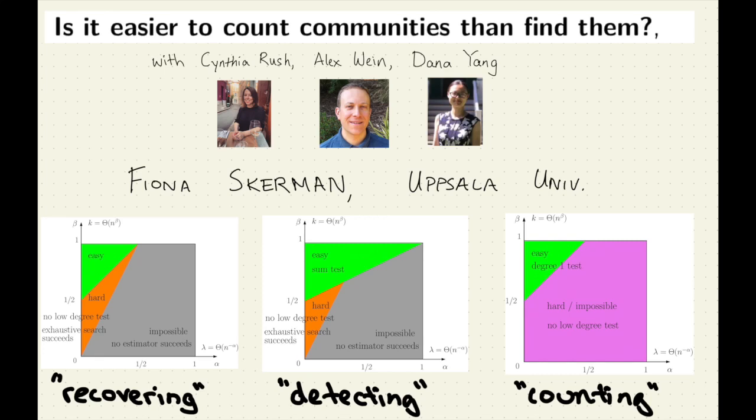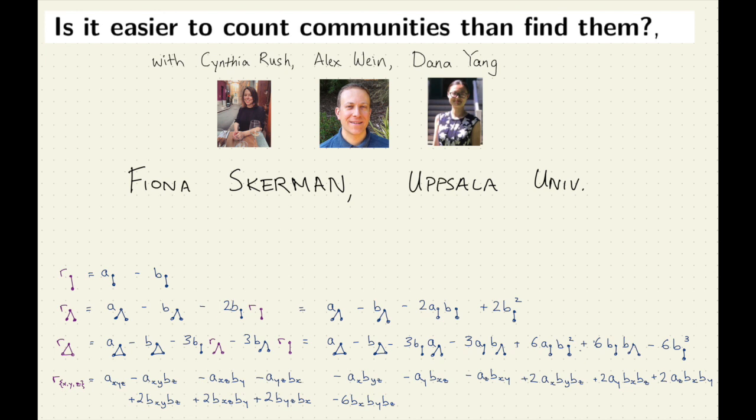These are classical things in our little subfield — this idea of recovering and detecting, and there's this detection-recovery gap for some problems. This is a sort of new problem we've called counting, so it's another testing problem. One way to sell this story is with the phase transition diagrams; another way is that there's some really nice combinatorics going on under the hood, both for testing problems and recovery problems.